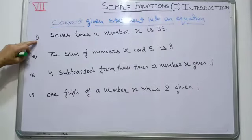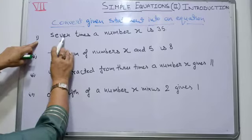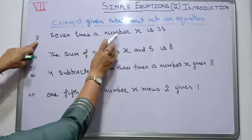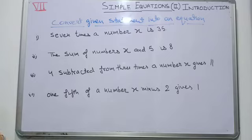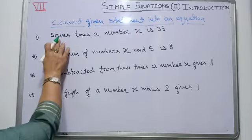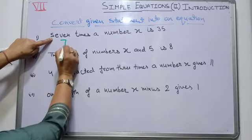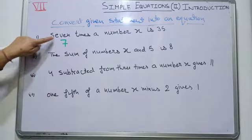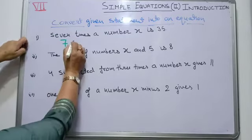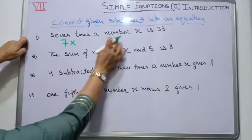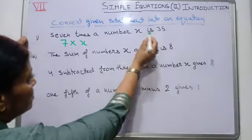Let's have the first example. The first one is 7 times a number x is 35. To write this statement into an equation, we write 7 mathematically, and times means we have to multiply. So, 7 multiplied with the number x, and for this word 'is', we have to write the sign of equality.